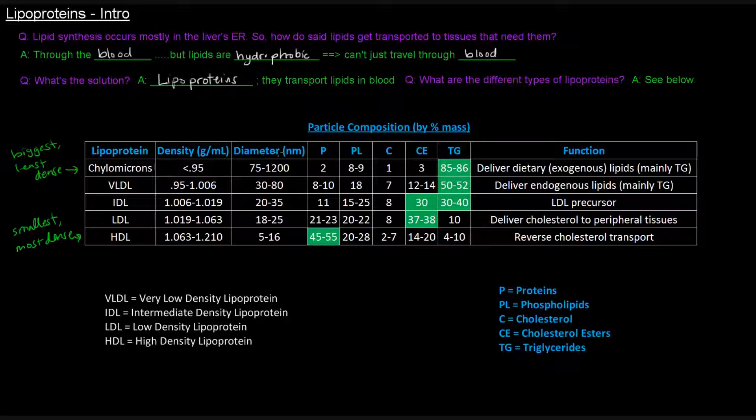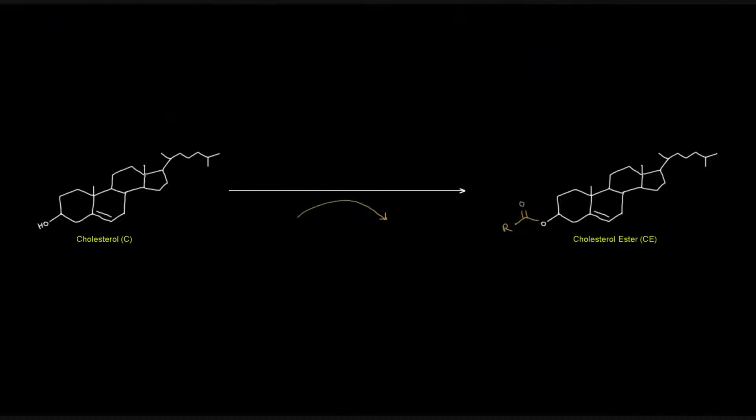Another thing that's important is the particle composition by percent mass. So what actually are the components that make up a lipoprotein? We've got P, PL, C, CE, and TG. P is proteins, PL is phospholipids, C is cholesterol, CE is cholesterol esters, and TG is triglycerides. This cholesterol here is free cholesterol, whereas CE is cholesterol esters. In fact, let's do that now.